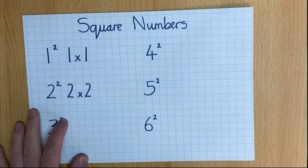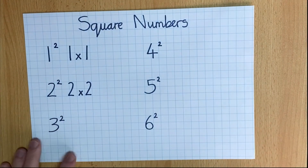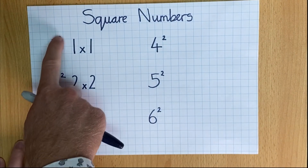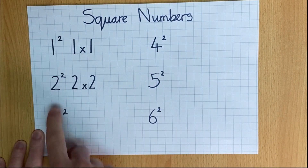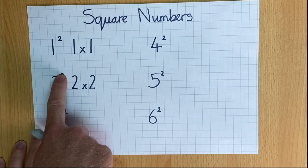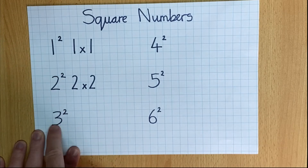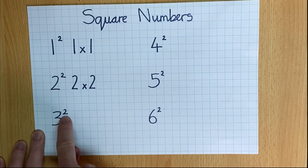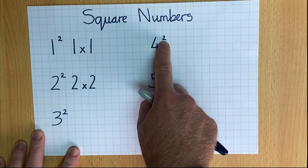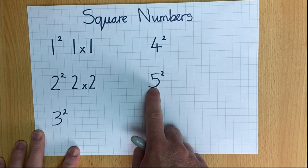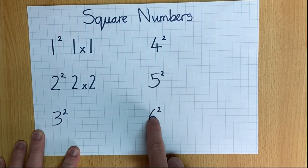So, these are squared numbers: one squared, two squared, three squared, four squared, five squared, six squared.